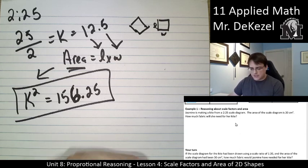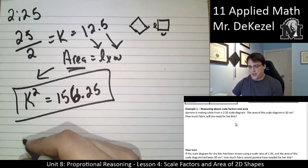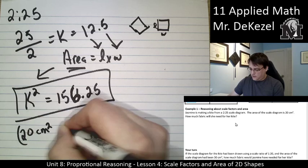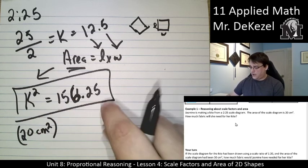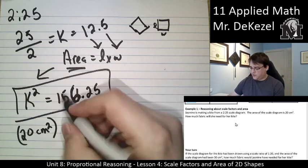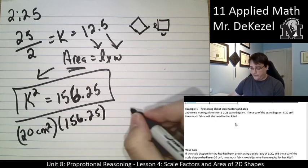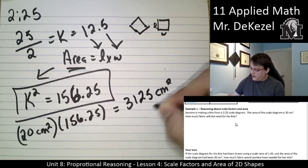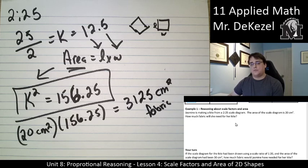So that is the scale factor for making that small shape into the larger shape. To find out how much fabric she needs, the area of the original, or the one on the piece of paper, is 20 centimeters squared. You're going to need to scale it up by the scale factor for area, because we're talking about area, centimeters squared. So we're going to multiply that by 156.25. We're going to need 3,125 centimeters squared of fabric to make our kite.